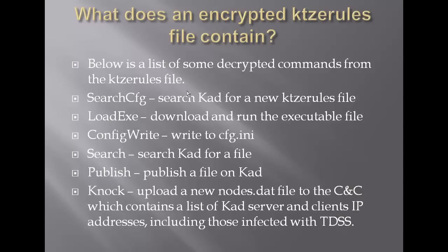The kdze-rules file contains a list of encrypted commands. First, the search_config command searches KAD for a new kdze-rules file, like an update. LORHC downloads and runs an executable. Config_write writes to the cfg.ini config file. Search searches the KAD network for a file. Publish publishes a file on KAD. And NOC uploads a new nodes.dat file to the C&C, which contains a list of KAD server and client IP addresses, including those infected with TDSS.